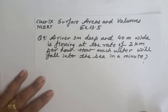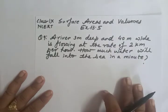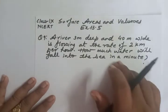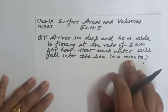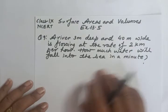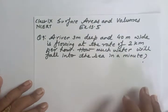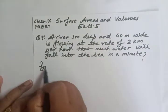This is also from Exercise 13.5, Question Number 9. A river 3 meters deep and 40 meters wide is flowing at the rate of 2 km per hour. How much water will fall into the sea in a minute? Let's draw a figure for this.